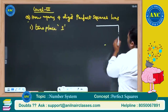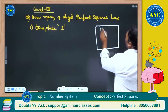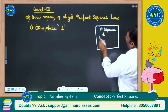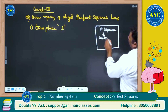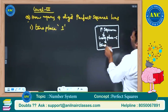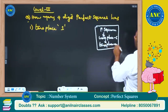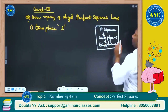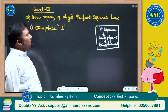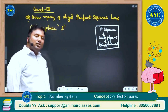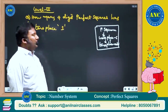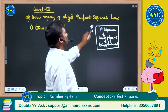In my previous class we discussed a concept: if a number is a perfect square and the units place is 6, then the tens place will be odd. Vice versa is also true — if the tens place is odd, then the units place is 6. I will prove it to you.